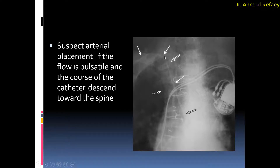Another example of malpositioning of the central venous catheter: inserted through the right subclavian vein, but there is pulsatile flow, suggesting it may be malpositioned in the artery. Also notice the course is oblique, going toward the spine rather than parallel to it — so this is arterial placement of the central venous catheter.